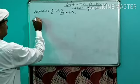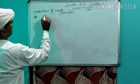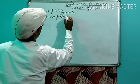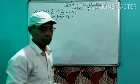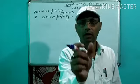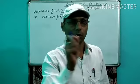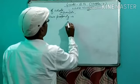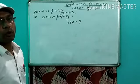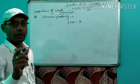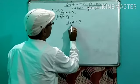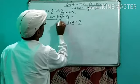First, closure property. When two whole numbers are added, the result — the sum of the two whole numbers — is also a whole number. For example, 3 plus 4 equals 7. Both 3 and 4 are whole numbers, and their sum 7 is also a whole number. This is called the closure property.